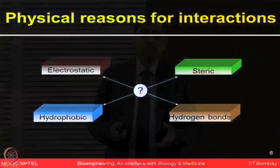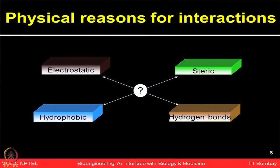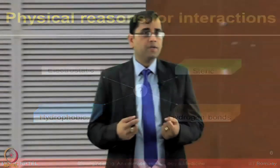Different ways of interactions may happen, and what could be the physical reasons for such interactions. For example, electrostatic interactions, steric effects, hydrophobic interactions, and hydrogen bonds — all of these are actually involved in these kinds of interactions. Knowing these different methods of interaction, their physical reasons, and then how to use technologies to study them becomes very crucial.